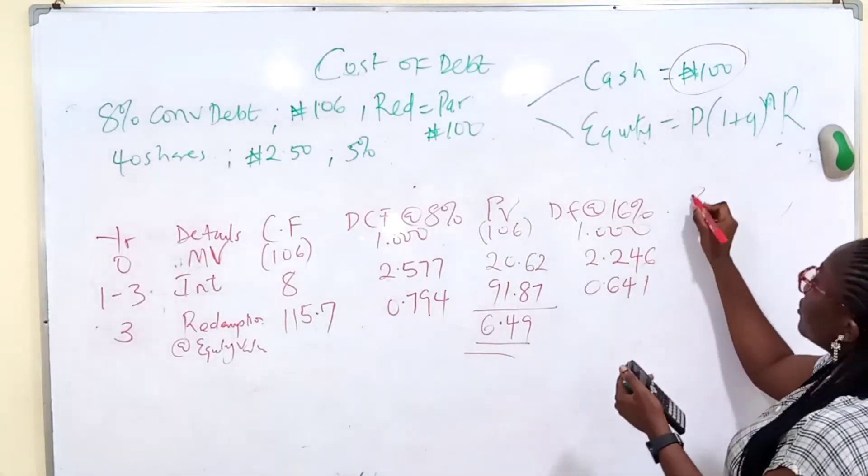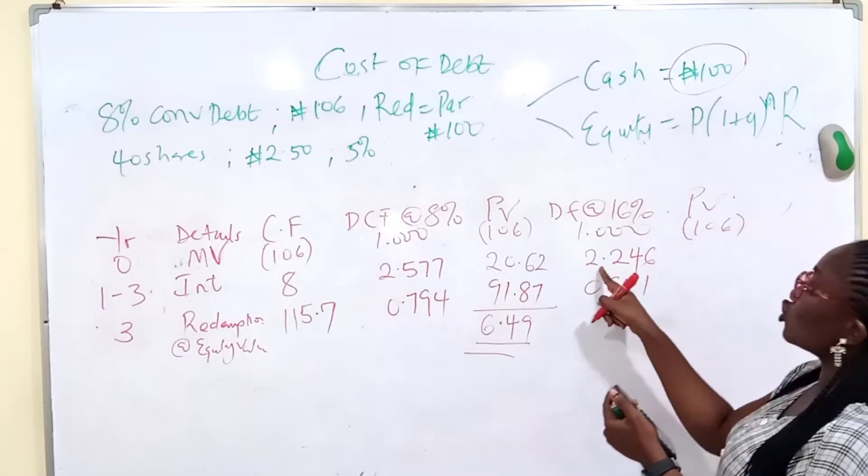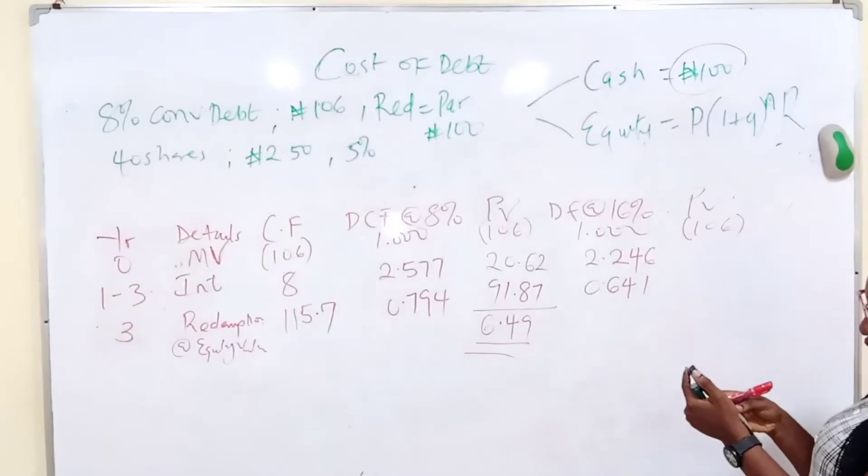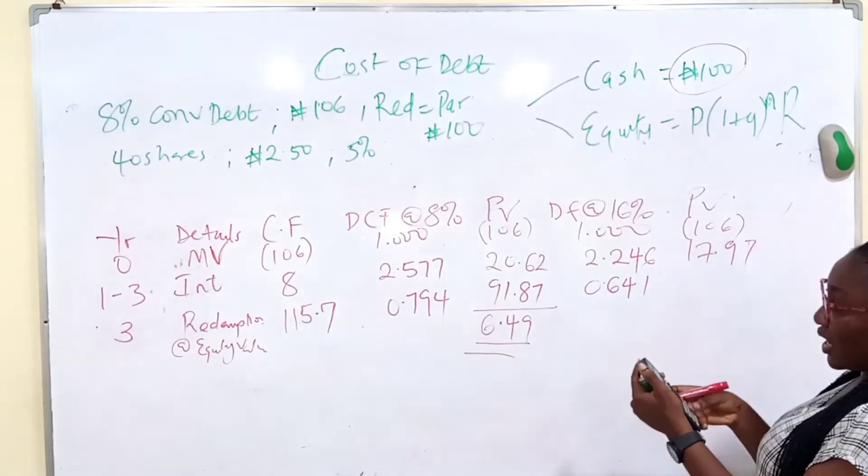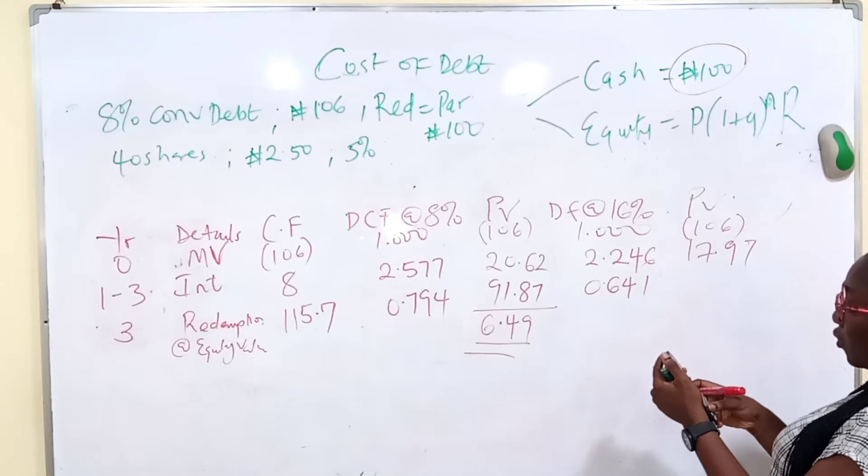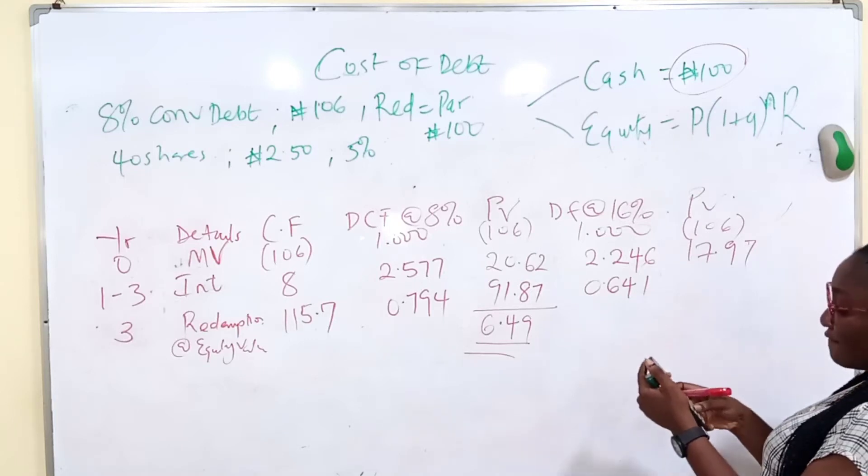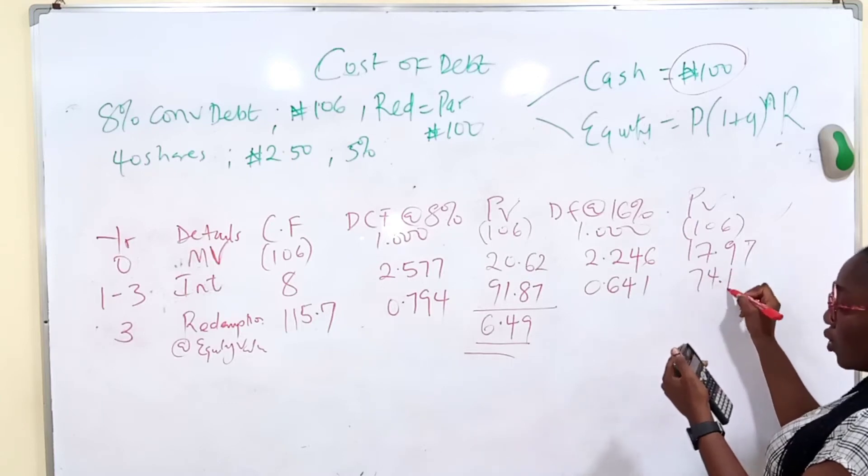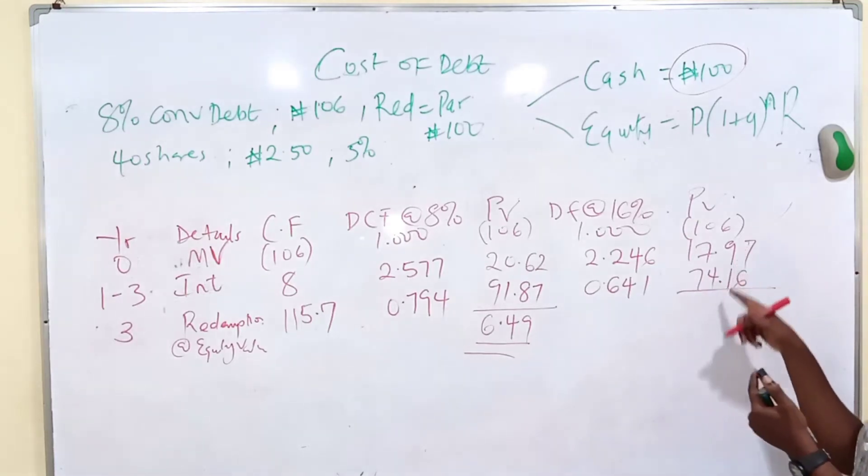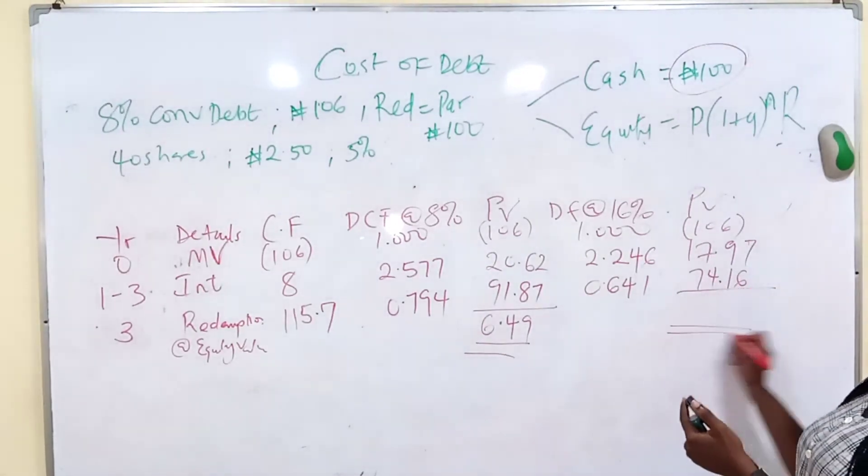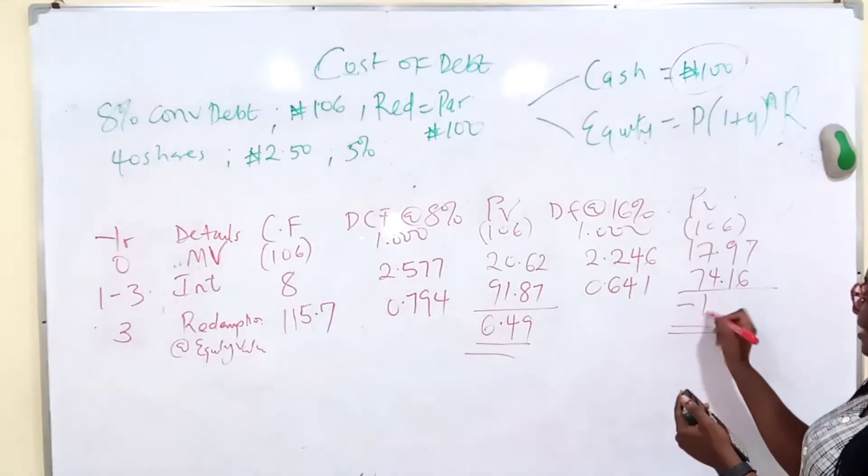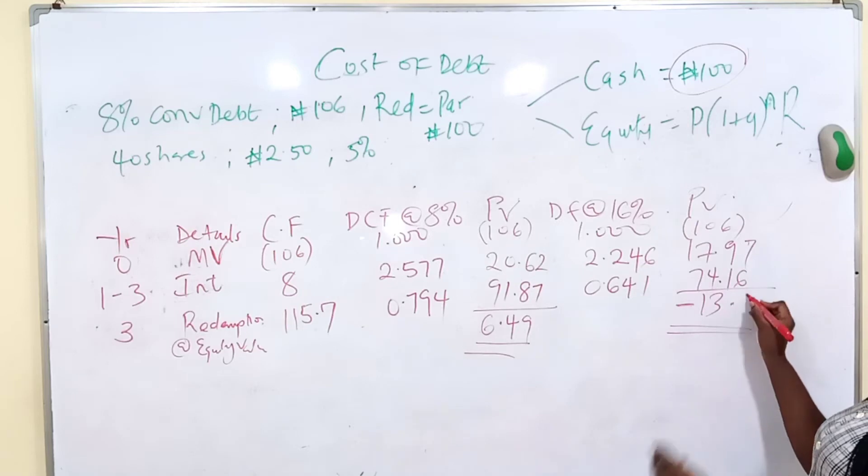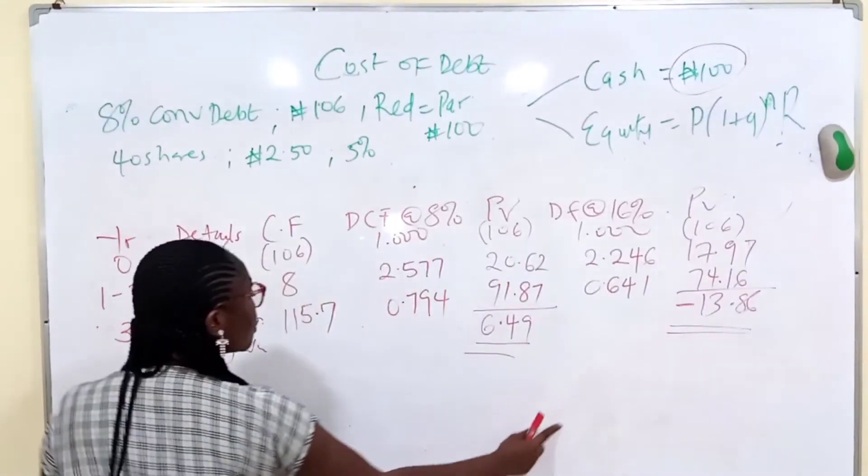1 minus answer divided by 0.16. That would give you 2.246. Then for year 3, discount factor 0.16 raise power minus 3, and that would give you 0.641. Now let's multiply. 2.246 times 8, that would give you 17.97 and 0.641 times 115.7, that would give you 74.16. So let's get the NPV. You have 74.16 plus 17.97 minus 106, minus 13.86. That is even very far.